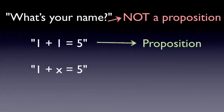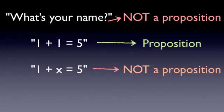So, look at the third statement. Here we've replaced a number with a variable. Now at first you might think that this is a proposition, but it's actually not. The reason is that we don't actually know the value of x, so we can't evaluate the truth value of the statement. So, the third statement is not a proposition.